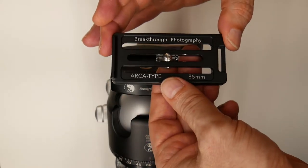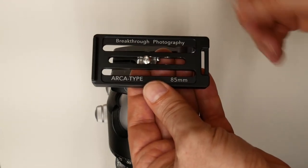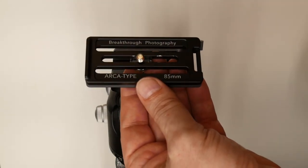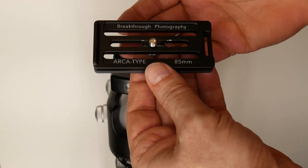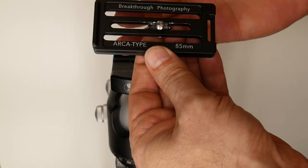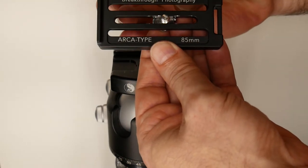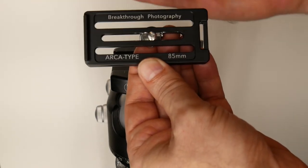For example, I have the Nikon 70 to 200, and it has two holes available in the lens foot. And so if I use two holes, both holes and two screws, nice and solid, isn't going to move.